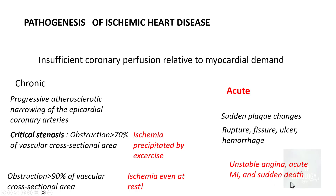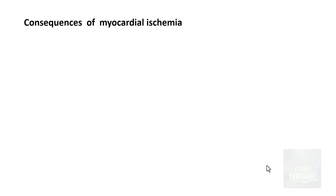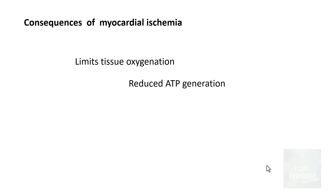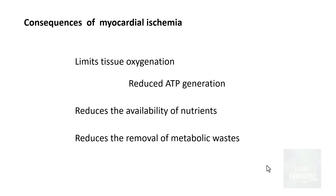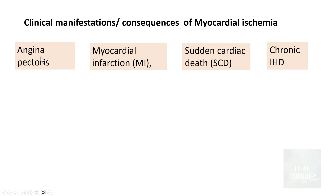The consequences of myocardial ischemia include deprivation of oxygen leading to reduced ATP generation, reduced availability of nutrients, and reduced removal of metabolic wastes. The clinical manifestations of myocardial ischemia can be categorized into: angina pectoris, which is basically chest pain; myocardial infarction; sudden cardiac death; and chronic ischemic heart disease.